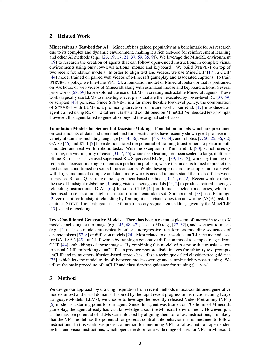Models like Gato and RT1 have shown the potential of training to perform both simulated and real-world robotic tasks. Most cases where deep learning has been scaled to large, multitask offline reinforcement learning datasets have used supervised reinforcement learning. This approach frames the sequential decision-making problem as a prediction problem, where the model is trained to predict the next action based on a future outcome. Recent research has explored using vision-language models to produce natural language instructions for relabeling. For example, DIAL fine-tunes CLIP on human-labeled trajectories, which is then used to select an instruction from a set of candidates. Another approach uses Flamingo Zero-Shot for relabeling by framing it as a visual question-answering task. In contrast, our agent relabels goals using future trajectory segment embeddings provided by the MineClip visual embedding.